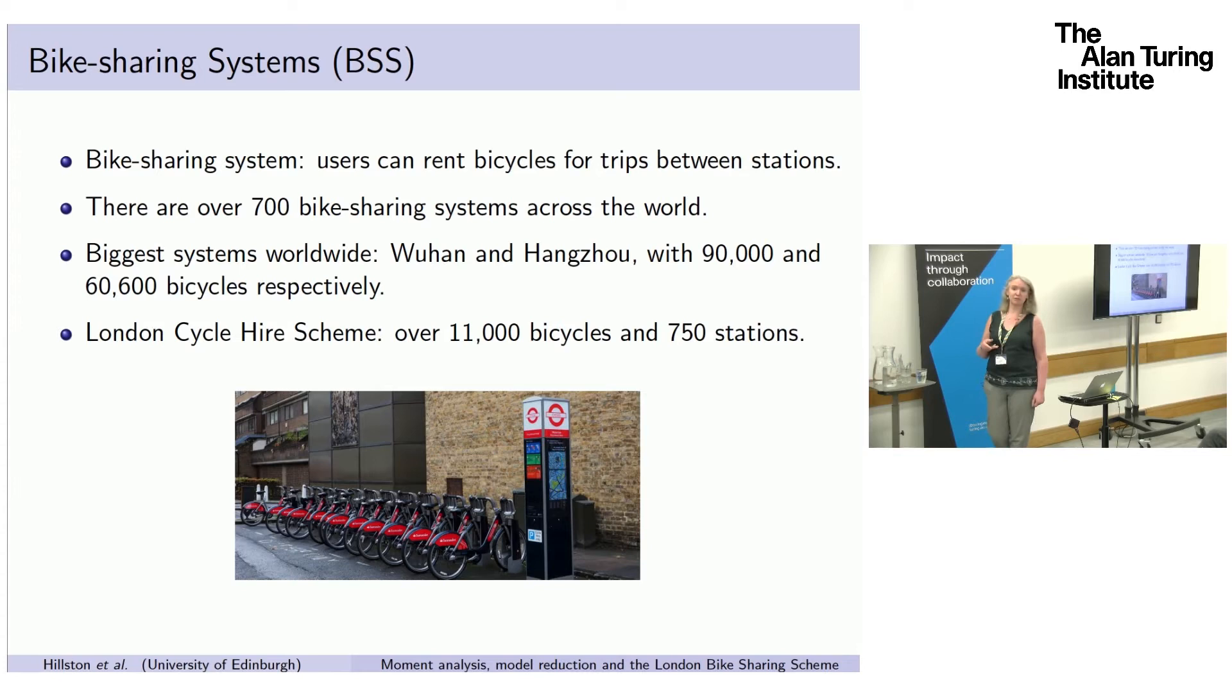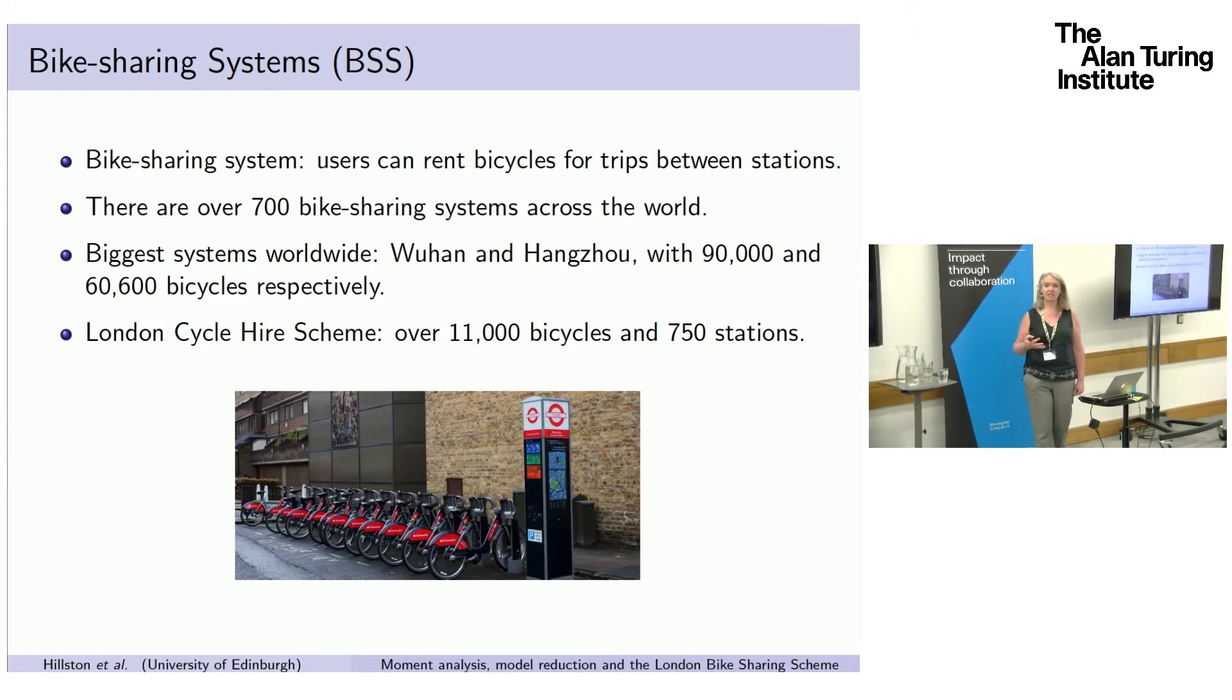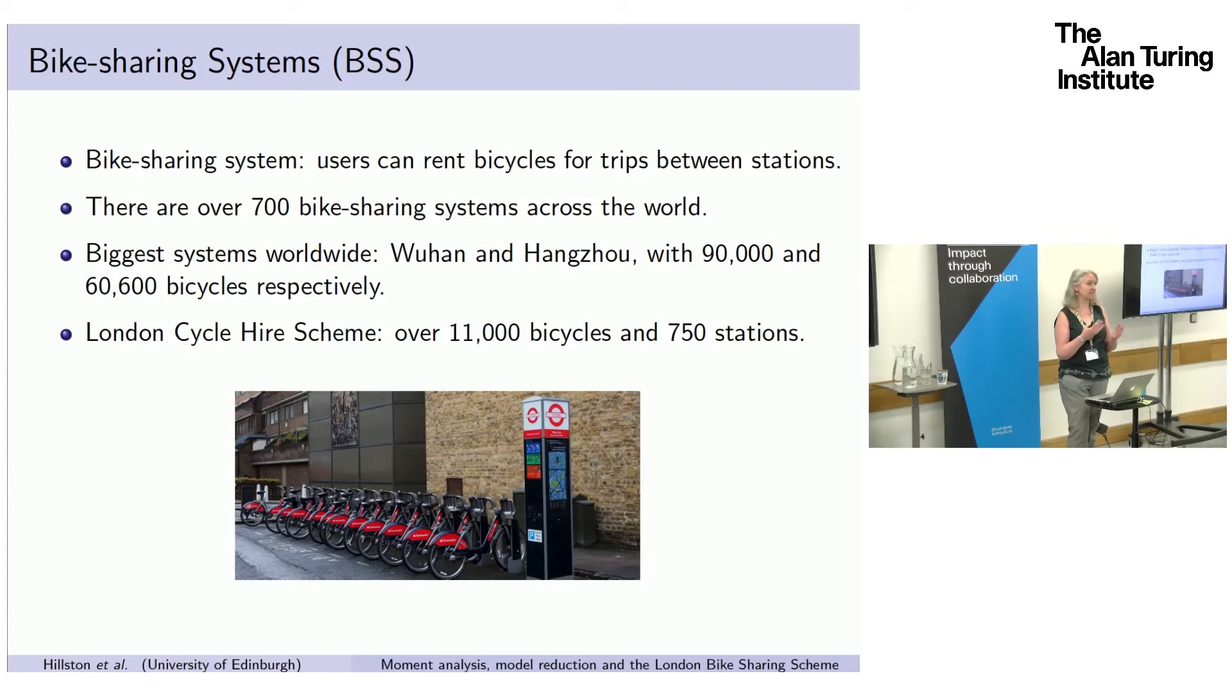Most people are now familiar with bike-sharing systems, the idea that users can rent bicycles between stations in the city. They sometimes have to join, sometimes they can do it on an ad hoc basis. They usually have some kind of web interface or smartphone app where you can check availability or make some idea of where you want to go.